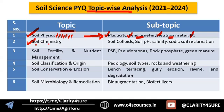After soil physics, the next important heading is soil chemistry. Questions from soil chemistry covered soil colloids, soil pH, salinity, and soil reclamation. These are the areas from where the questions were asked from soil chemistry.